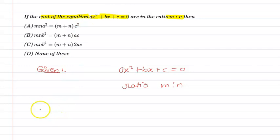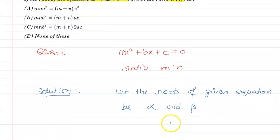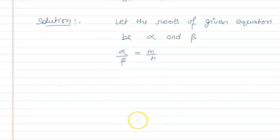Now let us move on to solution part. First of all, let the roots of given equation be alpha and beta. We have ratio given for the roots, so that means we can say alpha upon beta equal to m upon n. And because it is a ratio, let us say alpha is equal to m into k and beta is equal to n into k.